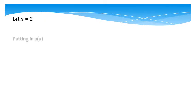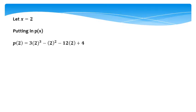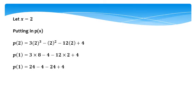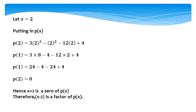Let x equal 2, putting it into p(x). After putting in the value of 2: 3 times 2³ minus 2² minus 12 times 2 plus 4, which equals 3 times 8 minus 4 minus 24 plus 4. After simplification, the result is 24 minus 4 minus 24 plus 4; positive and negative values cancel, so p(2) equals 0. Hence, x equals 2 is a zero of p(x). Therefore, (x minus 2) is a factor of p(x).